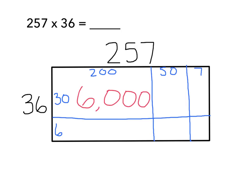Moving over to the right, this array is 50 by 30. I know that 5 times 3 is 15, so 50 times 30 is going to be 1,500. My next array is 7 by 30, and I know that 7 times 3 is 21, so 7 times 30 is 210.